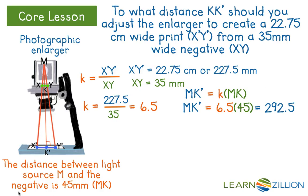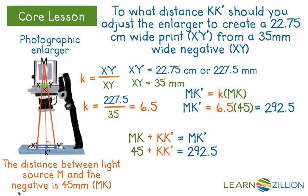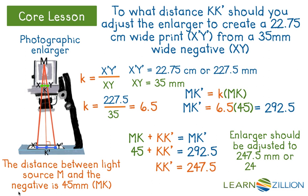So that's how long M K prime needs to be. Our job, though, is to find the distance from K to K prime in order for this enlarger to be set properly and give a correct dilation of the negative. We know by segment addition that M K plus K K prime is going to give us the length of M K prime. By plugging in the information we know, we have 45 plus K K prime equals 292.5. We can solve for K K prime and get the measurement being 247.5. Therefore, you need to adjust the enlarger so that K K prime is 24.75 centimeters, which is the same as 247.5 millimeters.